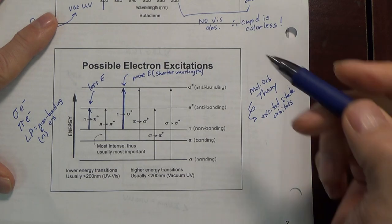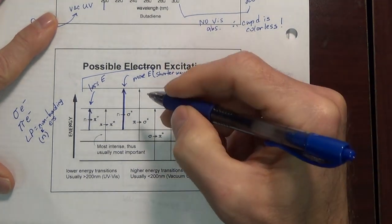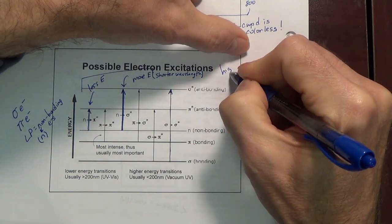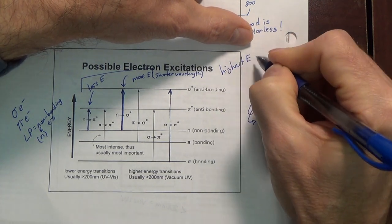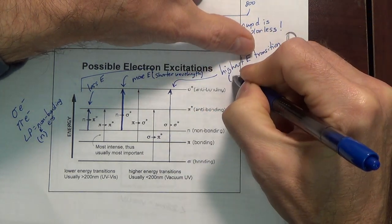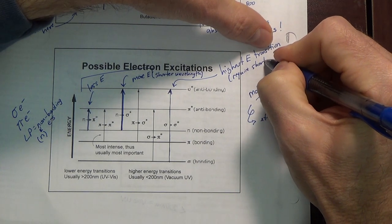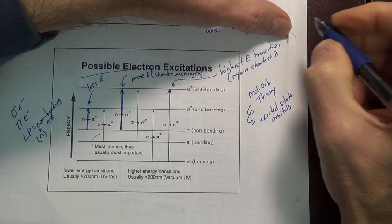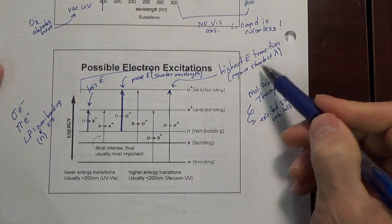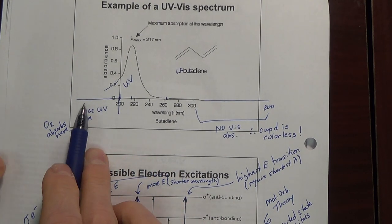Which of these transitions takes the most energy? The most energy is required for this one here — this is your highest energy transition or excitation, and this is going to require the shortest wavelength. What's the shortest wavelength here? Well, you could say 200, but actually we could go into the vacuum UV, which would be even shorter. However, this transition is usually in the vacuum UV.